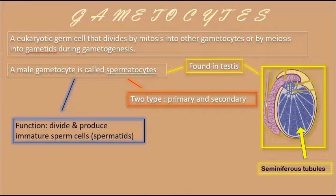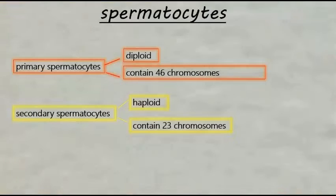There are two kinds of spermatocytes: primary and secondary. The function of spermatocytes is to divide and produce immature sperm cells called spermatids. Here, I'm going to briefly explain about the spermatocyte — there's a primary and secondary spermatocyte.